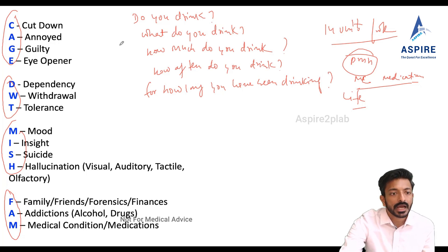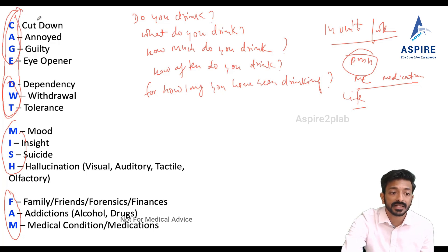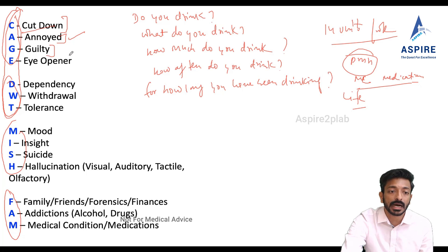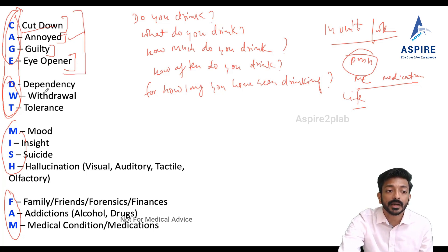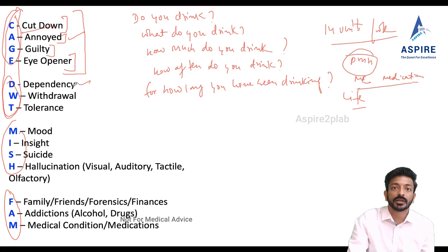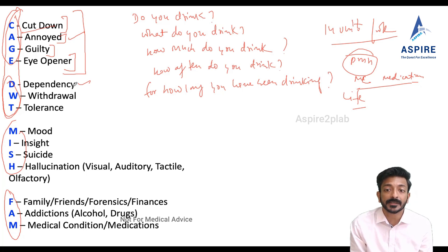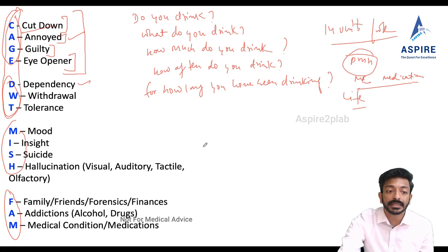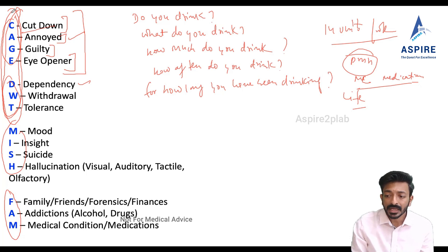After that, cover the CAGE questionnaire: Cut down — have you ever tried to cut down on your alcohol? Annoyed — do you feel annoyed when somebody talks to you about your drinking? Guilty — do you feel guilty when others talk to you about your alcohol? Eye-opener — do you use alcohol as the first thing in the morning? Then cover DWT for dependency: Dependency — are you able to do daily activities without drinking? Withdrawal — if you don't drink, do you get symptoms like tummy pain, sweating, nausea, or shaking hands? Tolerance — do you need to increase the amount of alcohol to get the same effect?